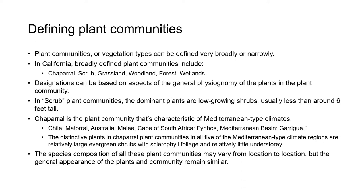Plant communities or vegetation types can be defined on a broad scale or refined to be more locally or regionally specific. On a broad scale, the most common plant communities in California are chaparral, scrub, grassland, woodland, forest, and wetlands.